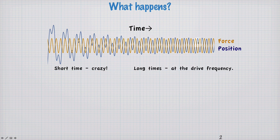It doesn't look sinusoidal at all. But as the simulation time increases, at long times, the position seems to be at the same frequency of the force, albeit 180 degrees out of phase. So we can identify two different regimes. This short time period we call the transient regime, and at long time periods, this is called the steady state regime.